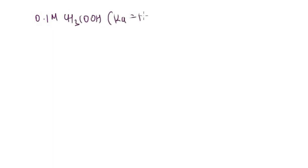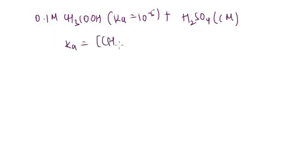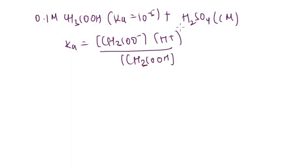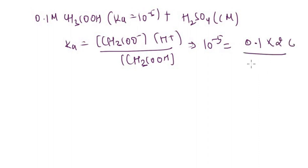We have 0.1 M acetic acid (Ka = 10⁻⁵) and C molar H₂SO₄. Ka = [CH₃COO⁻][H⁺]/[CH₃COOH] = 10⁻⁵. The acetate ion concentration is Cα (from weak acid), and [H⁺] comes from H₂SO₄ = 2C. Putting in values: 10⁻⁵ = (0.1α)(2C)/0.1.